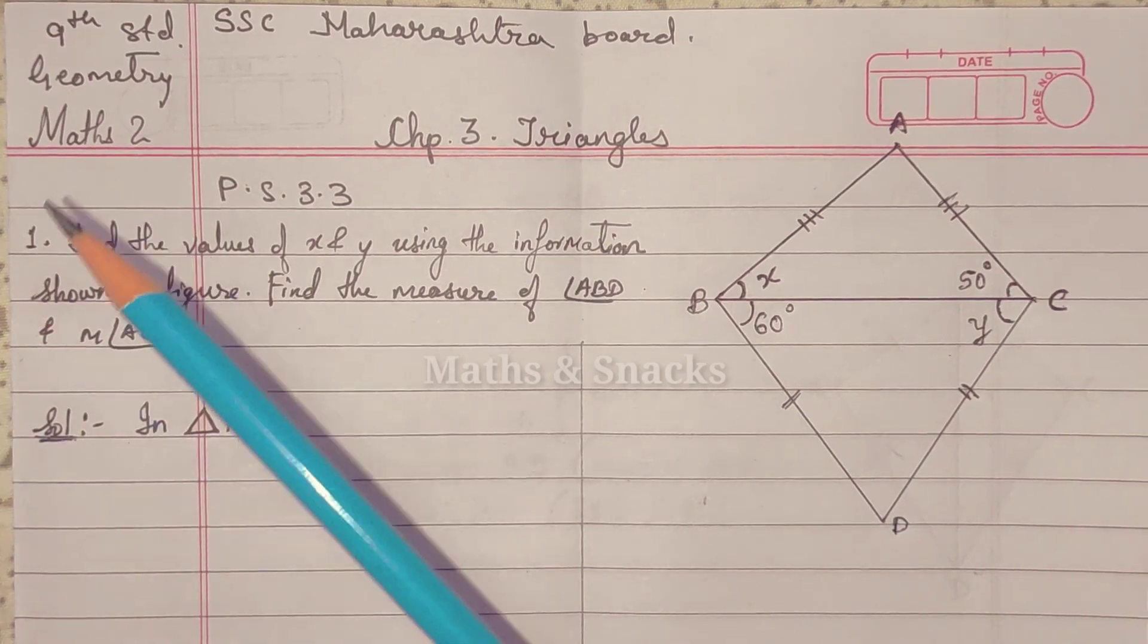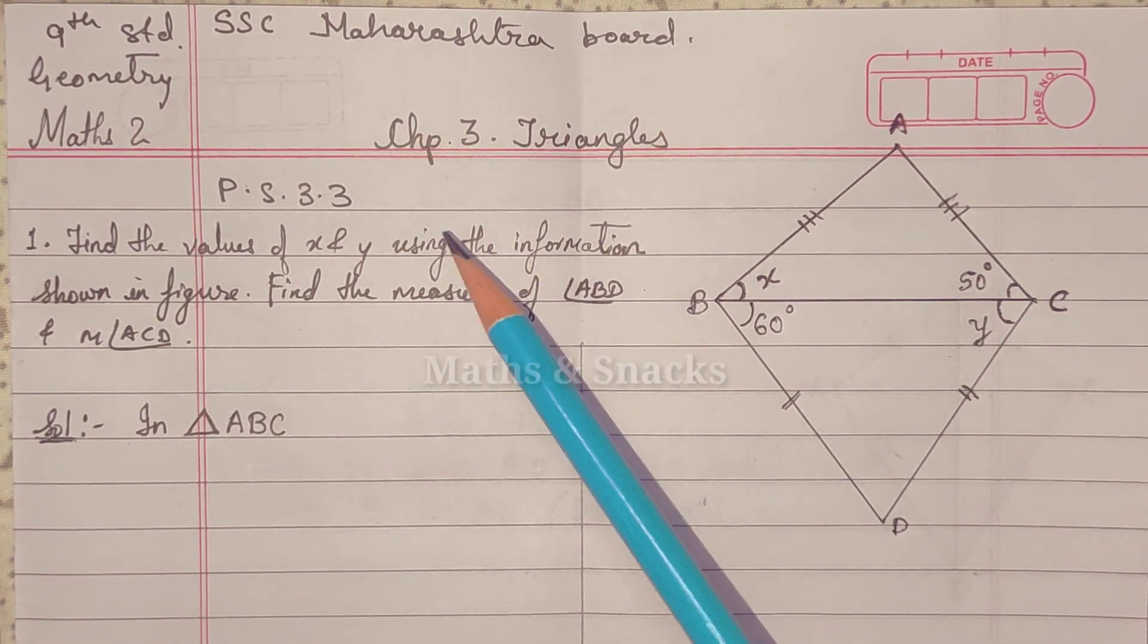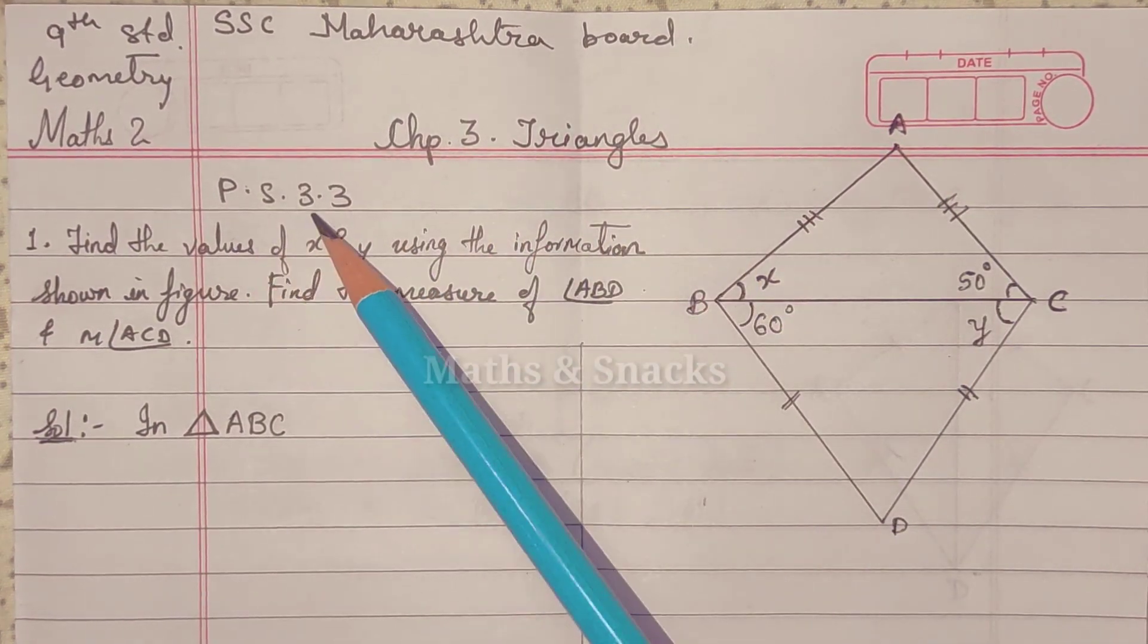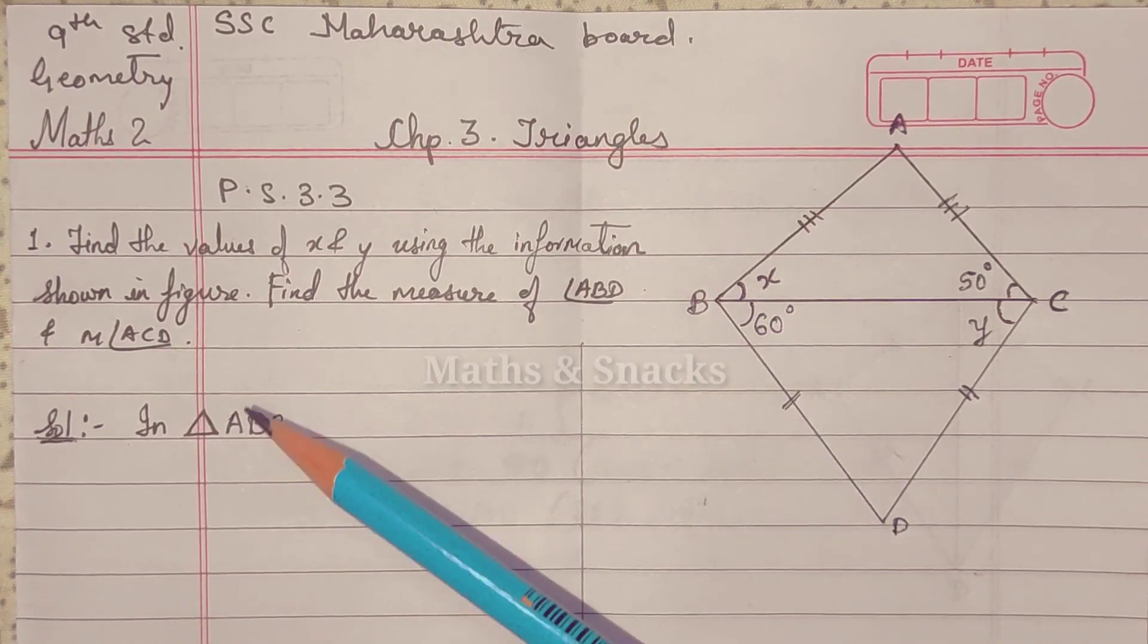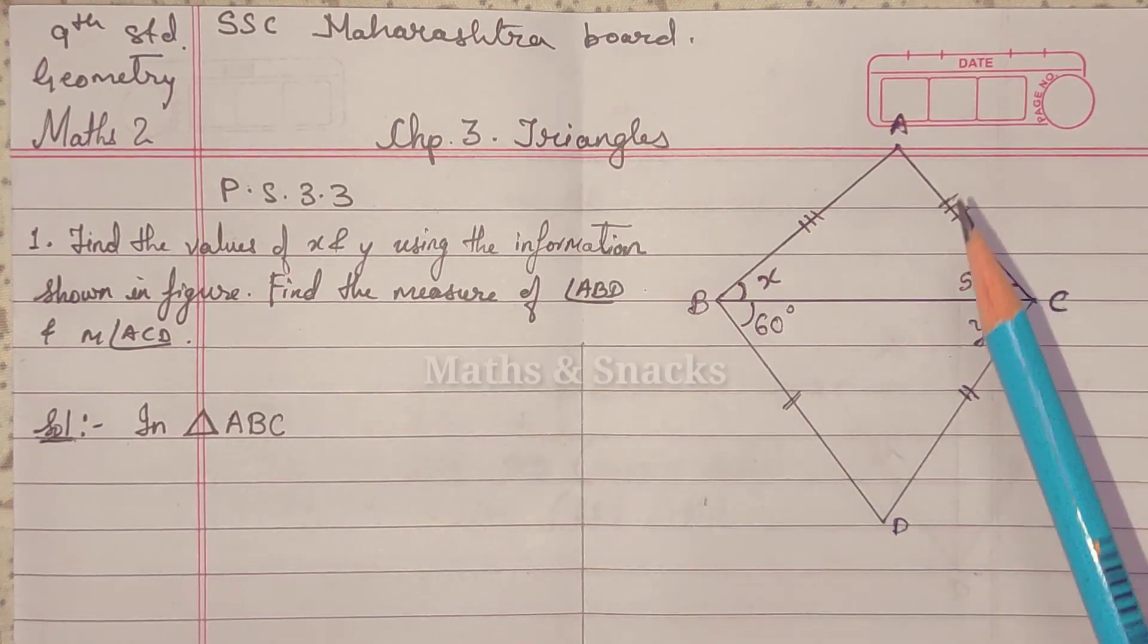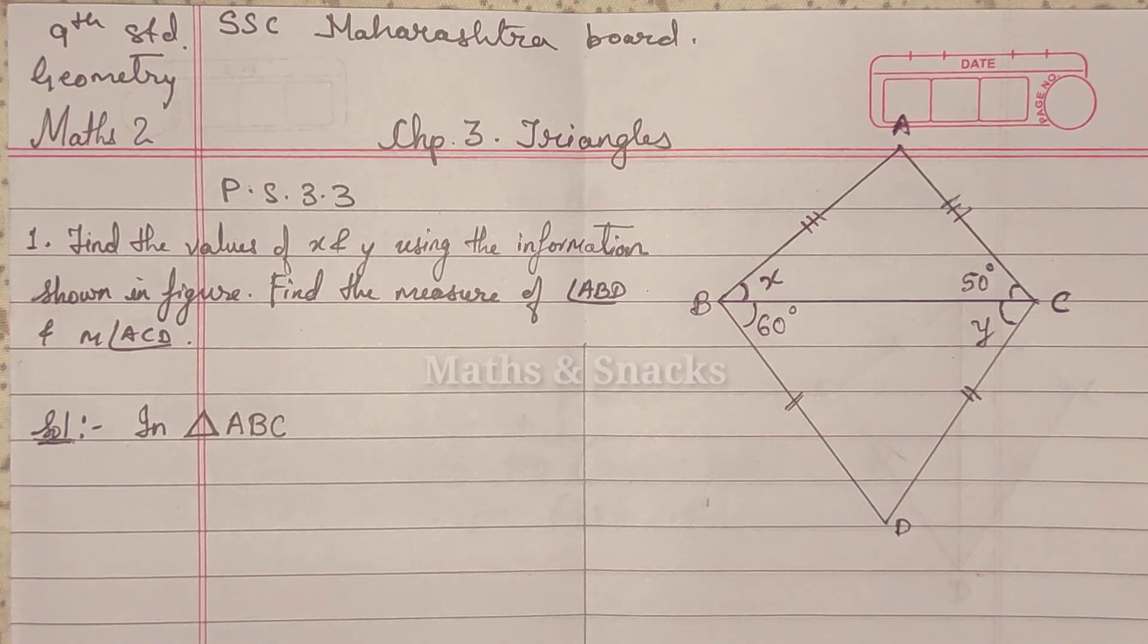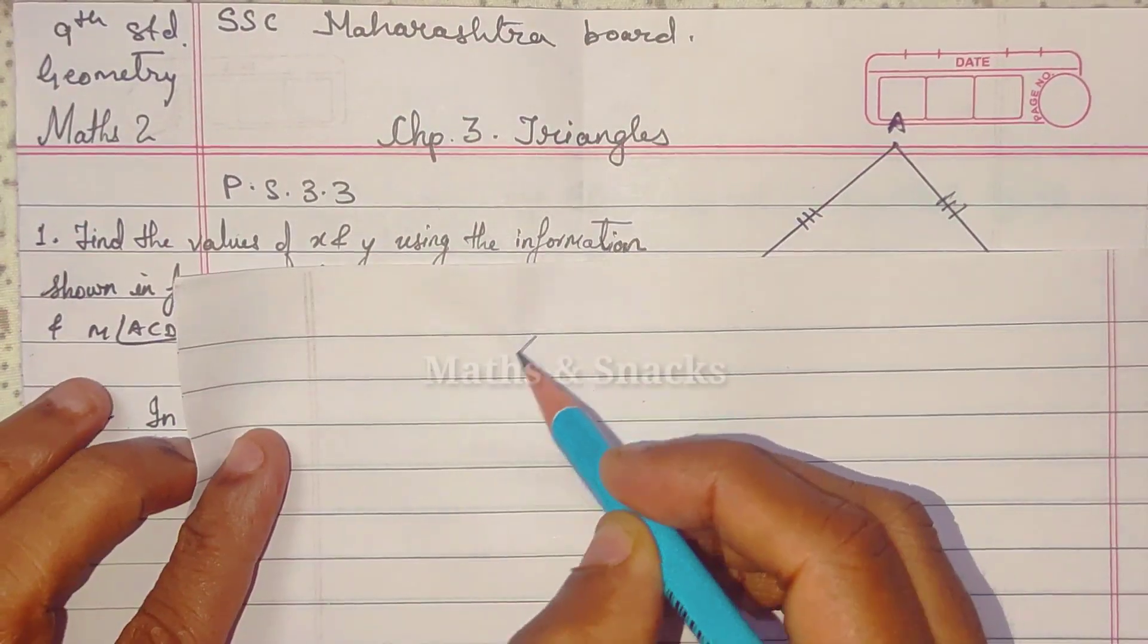Okay. Standard 9th Geometry, Chapter 3, Triangles, Practice Set 3.3. Before we start these sums, now see, the concept of Isosceles Triangle.